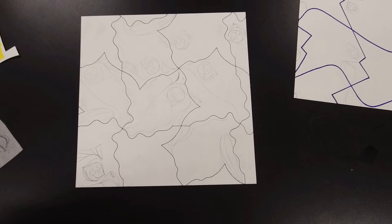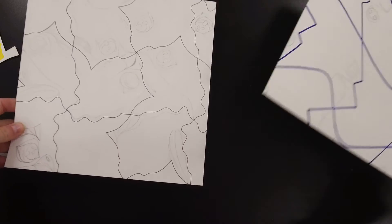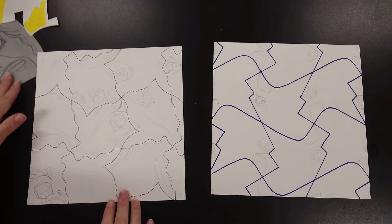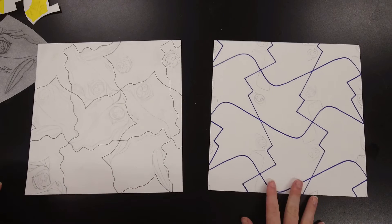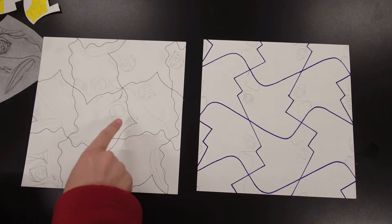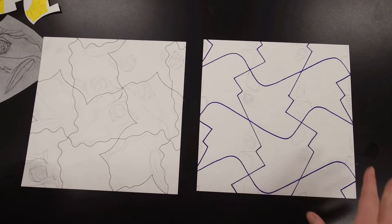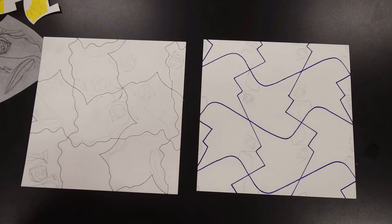So then my next step would be to decide if I want to outline the lines within the actual design here. Because I can use an ultra fine tip Sharpie or a colored pencil or anything, and I can go over the eyes and the beaks and the wings before I start adding color, or I could just go ahead and start adding color.